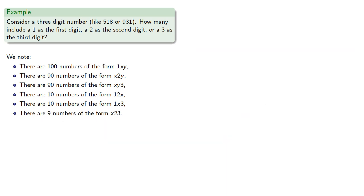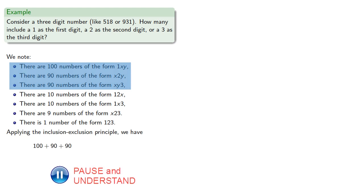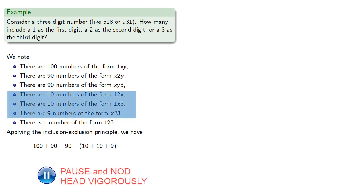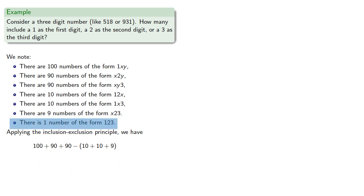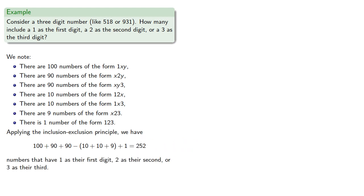Finally, there's only one number of the form 1 as the first, 2 as the second, and 3 as the third digit. Applying the inclusion-exclusion principle: we add the singles, subtract the doubles, and add the triple. We get 252 numbers that have a 1 as their first digit, 2 as their second, or 3 as their third.